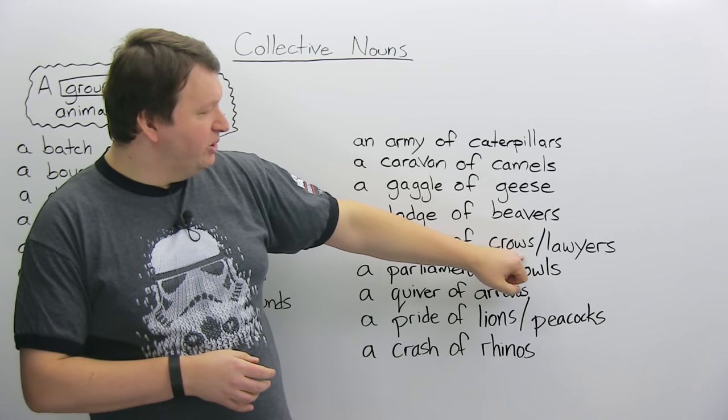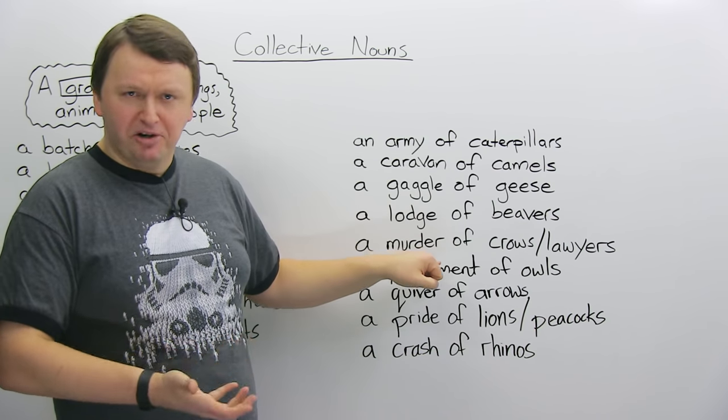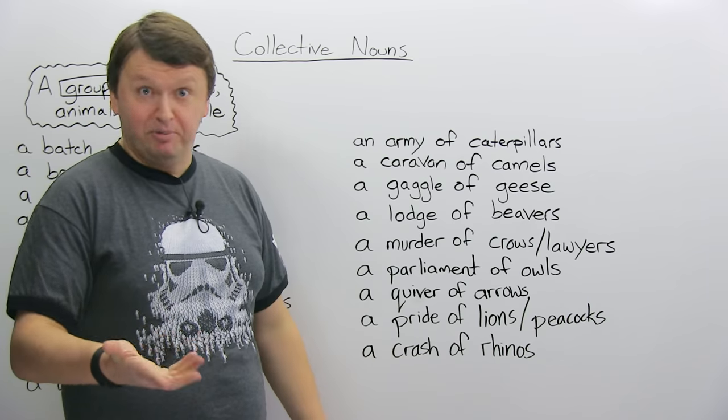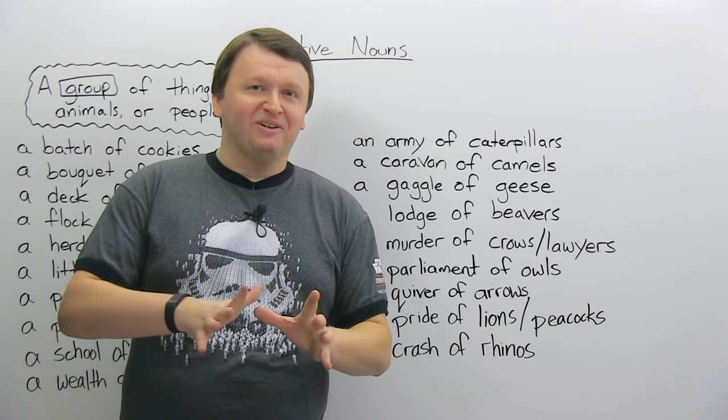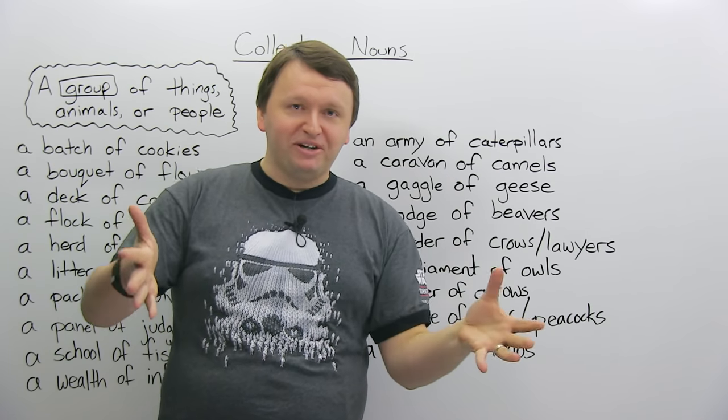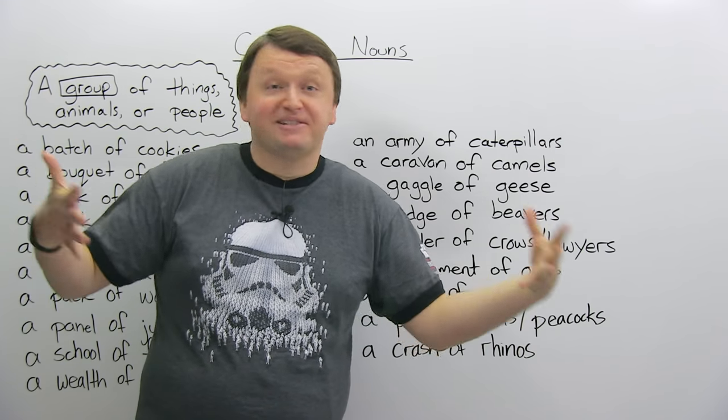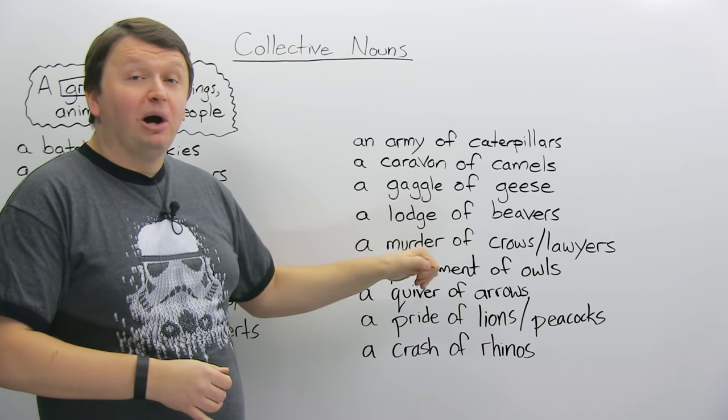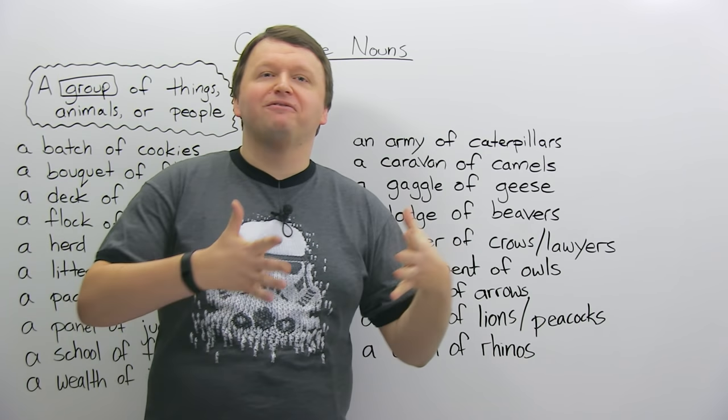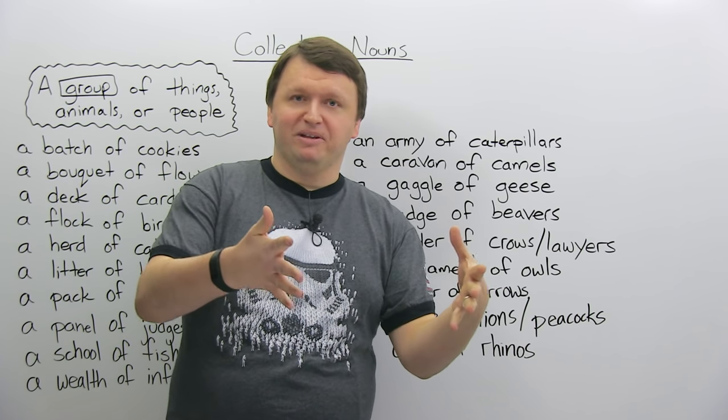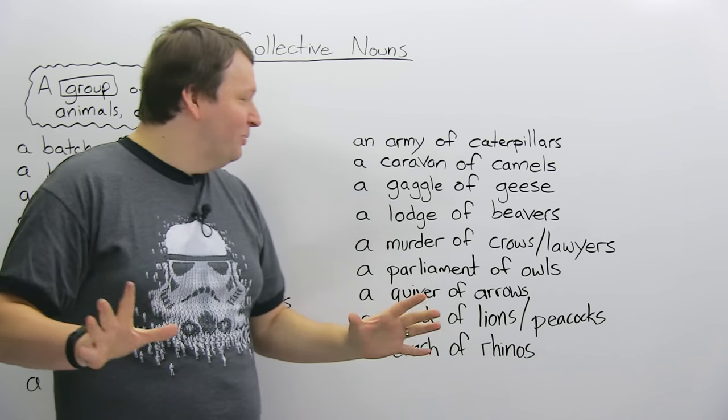Murder of crows. A crow is a big black bird. And you think of, really? A murder of crows? Yes. A murder of crows. And even more surprising and cool if you have a group of lawyers together. Lawyers. Liars. It's a joke. Some people say it's the same thing. You can call them a murder of lawyers. For example, a murder of lawyers entered the courtroom. Like six lawyers entered the courtroom. A murder of lawyers. It's a cool name.